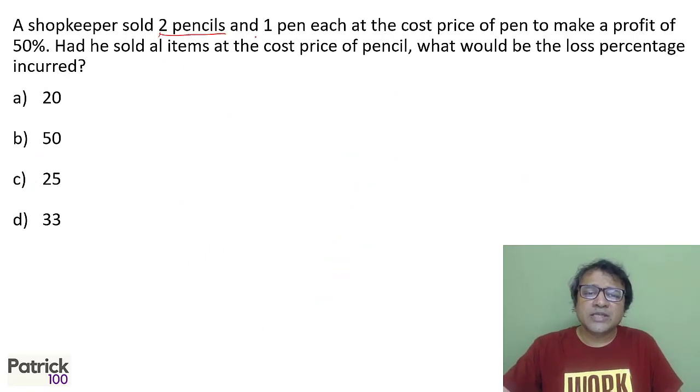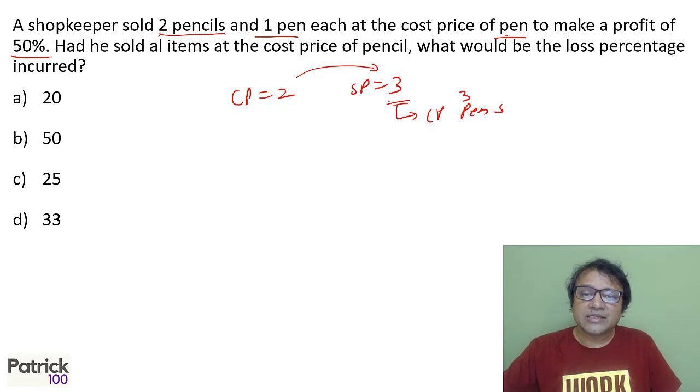A shopkeeper buys two pencils and one pen. To make a profit of 50%, if cost price is 2, selling price is 3. It becomes easier if you take numbers. The selling price of 3 equals the cost price of one pen. So cost price of three pens is 3, meaning cost price of one pen is 1.